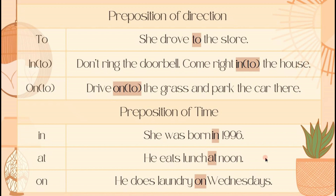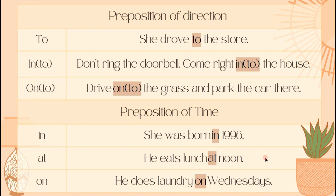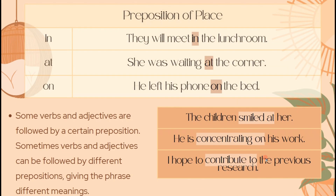Next, we have the preposition of time. A preposition of time allows you to discuss a specific time period, such as a date on the calendar, one of the days of the week, or the actual time something takes place. For example: 'she was born in 1996,' 'he eats lunch at noon,' and 'he does laundry on Wednesday.' Next, we have the preposition of place, which is used to refer to a place or space where something or someone is located.